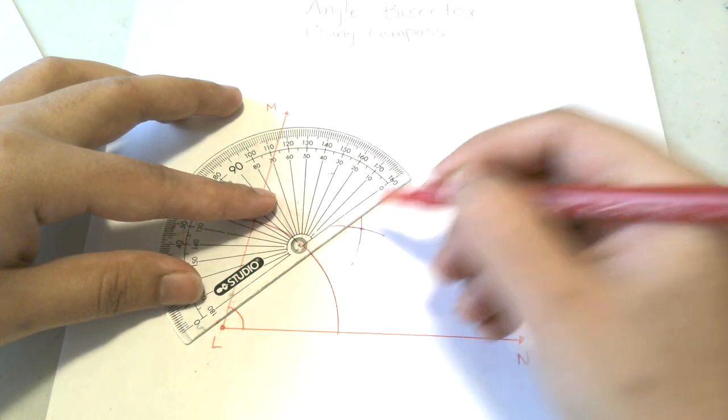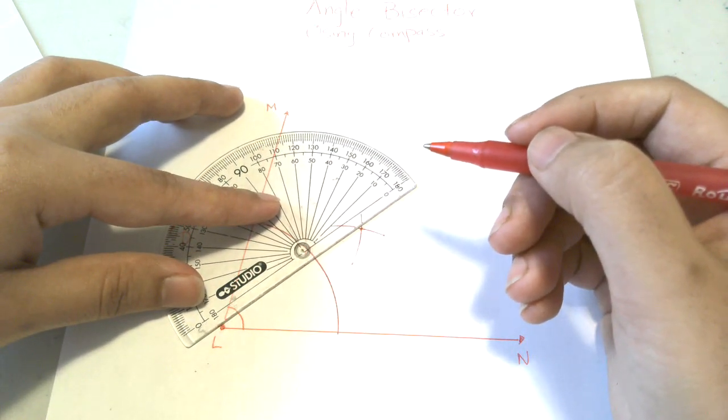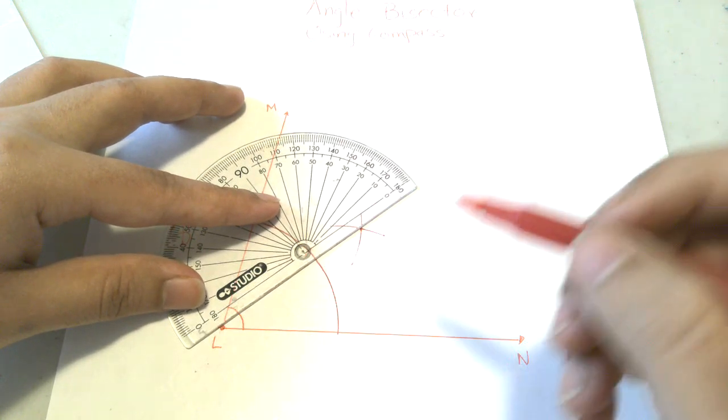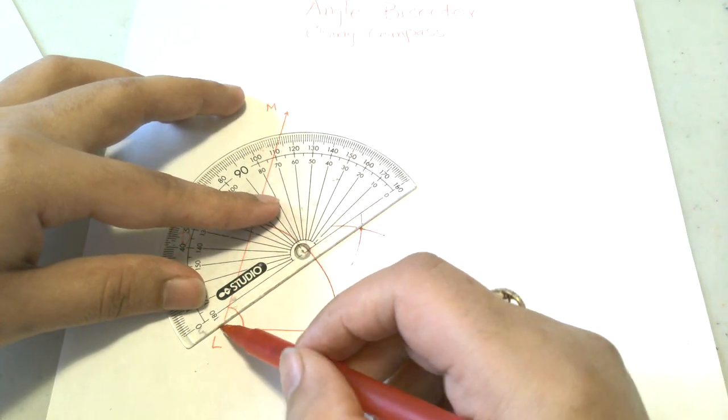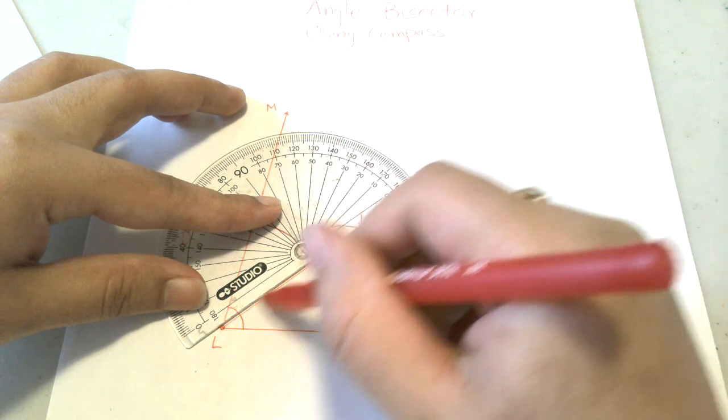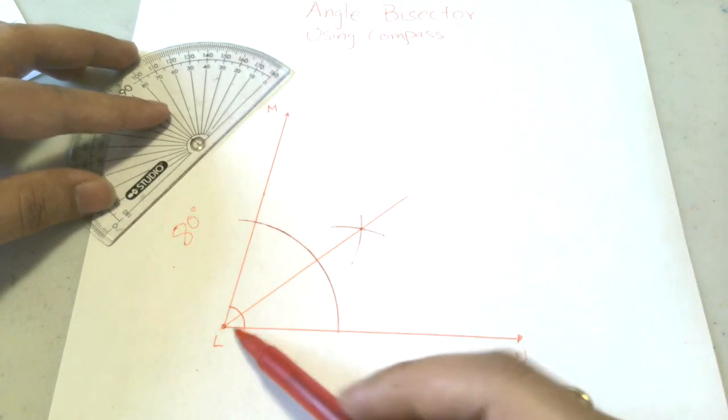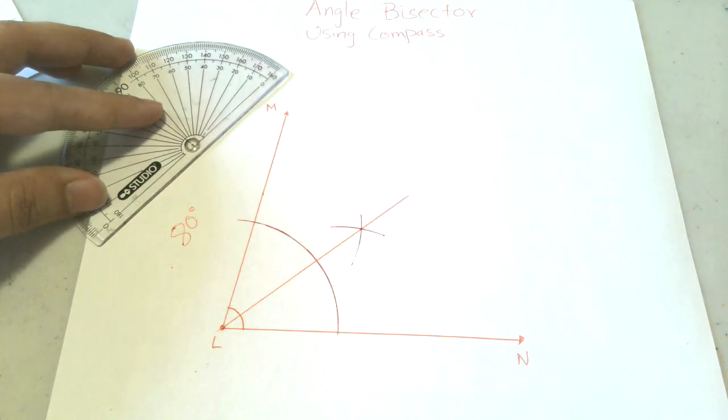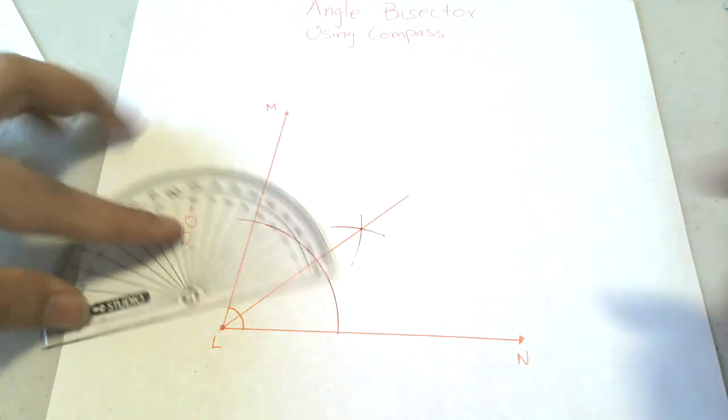You have to be very careful, that's why I suggest not to use pen. So here I cut the angle into equal halves using the compass.